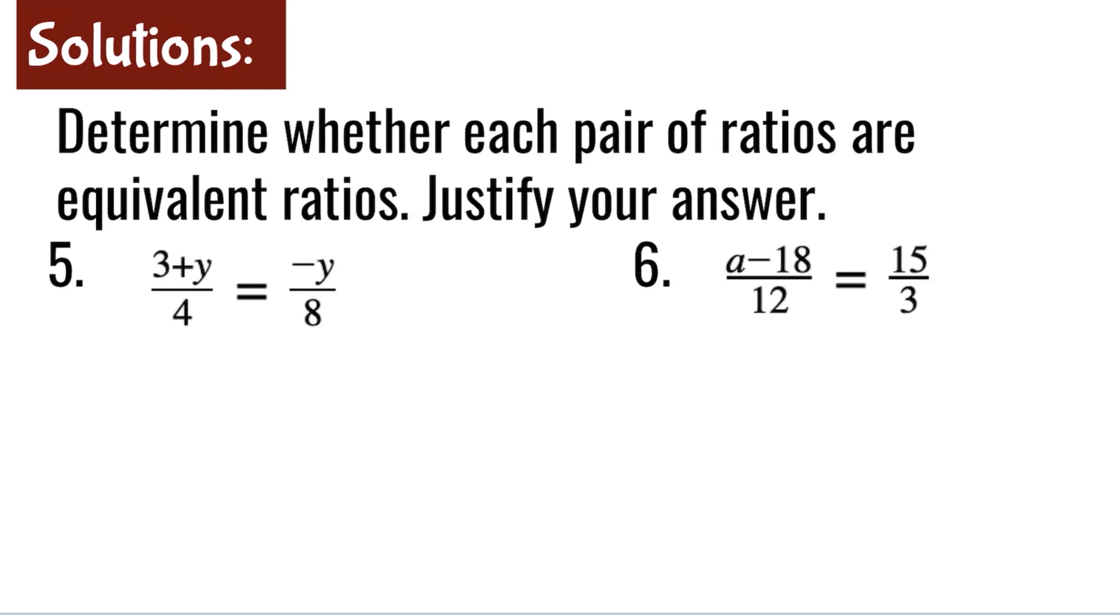Question number 5. 3 plus y over 4 is equal to negative y over 8. By cross products, we need to multiply 8 by 3 plus y. For the right side, 4 times negative y is negative 4y.